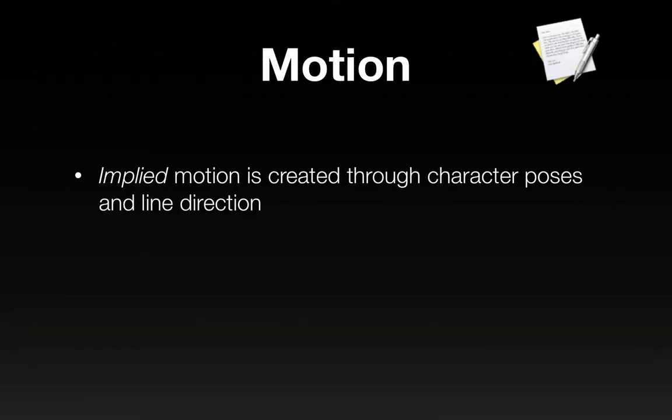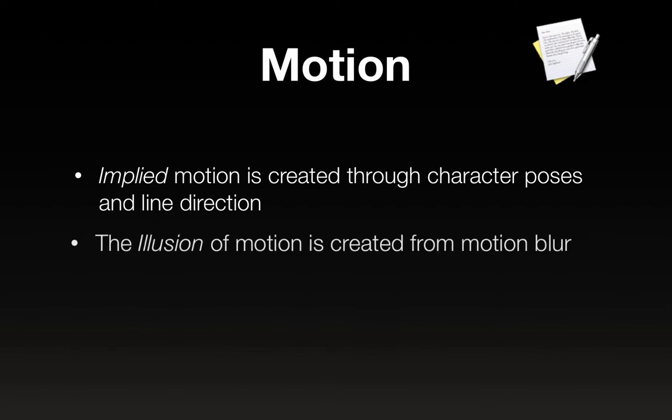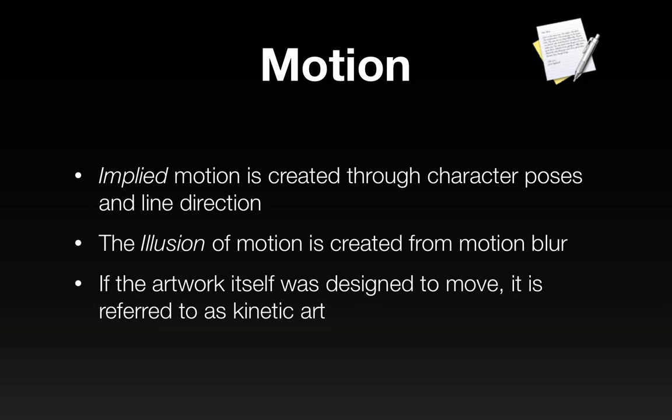Motion. There are two kinds of motion, and the difference between the two is subtle. The implied motion, or the implication of motion, is created through character poses and line direction — it depends on how things are placed. From what we know about physics, the objects or characters that you see cannot hold that pose or that placement; it's impossible, they have to be in motion. The illusion of motion is created from motion blur. So there are two different things: implied motion and the illusion of motion. And then if the artwork itself was designed to move, such as a mobile, it's referred to as kinetic art.